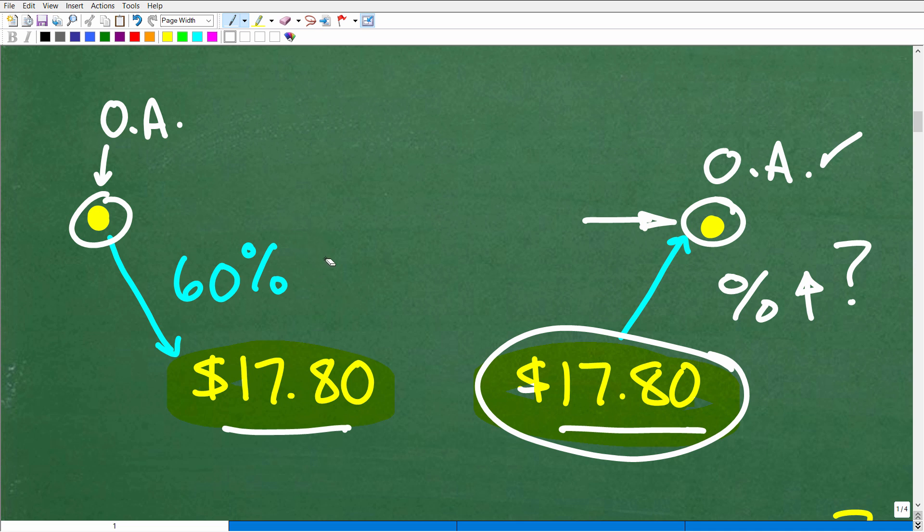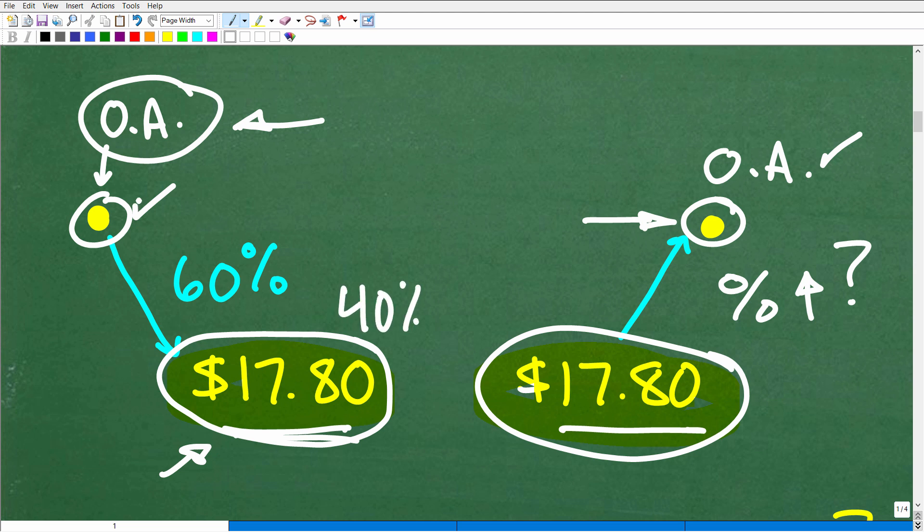So in order to solve this problem, we're certainly going to need the original amount, right? You've got to be very careful here because the stock fell 60 percent from whatever its starting point was. So does $17.80 represent 60 percent of the price? Think about this for a second. This is a real tricky part of this problem. The stock fell 60 percent, so $17.80 really just represents 40 percent of the original amount, not 60 percent.